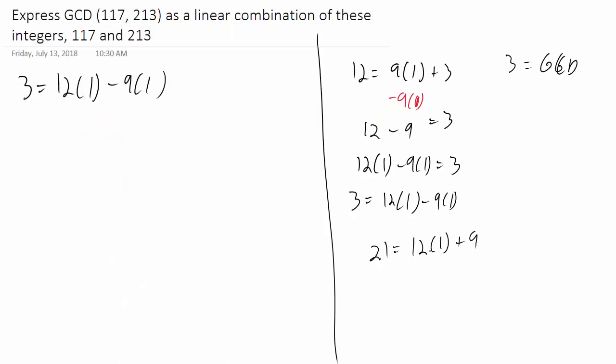I'd rather get that 9 in terms of the 21 and the 12 because it'd be working up. So I'm going to isolate the 9 here. 21 minus 12 is equal to 9. So I'm going to replace this 9 right here with a 21 minus 12. Since 9 is 21 minus 12, I'm going to replace the 9 with 21 minus 12.